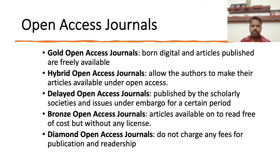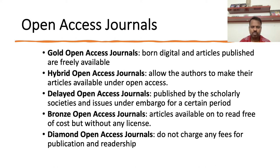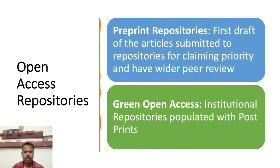The most important type is diamond open access journals. These journals do not charge any article processing charges for publication, and they are freely available for all readers. How do they get the money? They have endowment trusts or other mechanisms such as sponsorship models to run the journal. I was now going to describe the other route of open access.